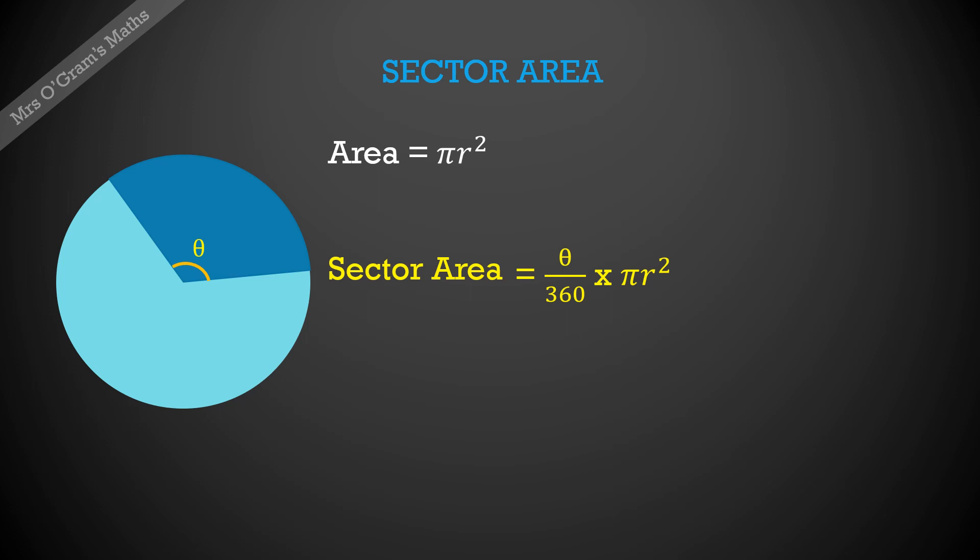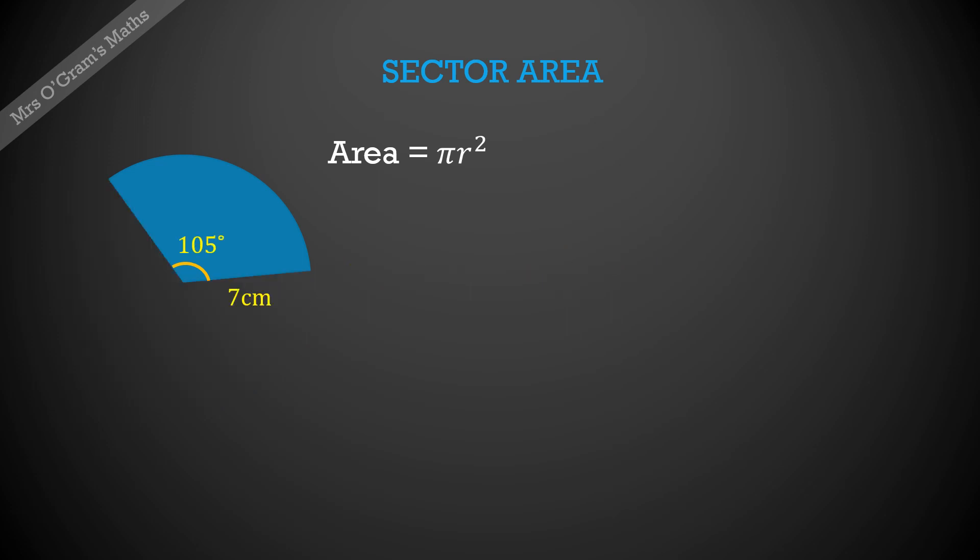So for example, we've got 105 degrees again and our 7 centimeter radius. So put that into our sector area formula: we put the 105 out of 360—that's the fraction of the whole circle that we want—and we'll multiply it by π times 7 squared. That comes to 44.9 centimeters squared.